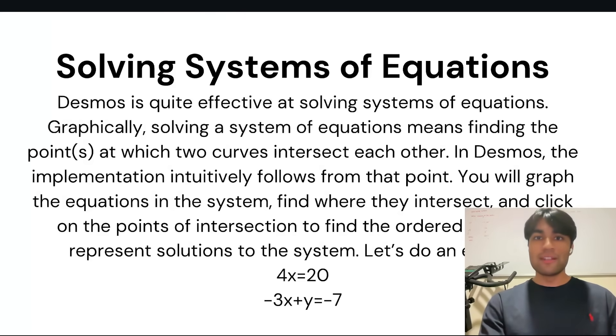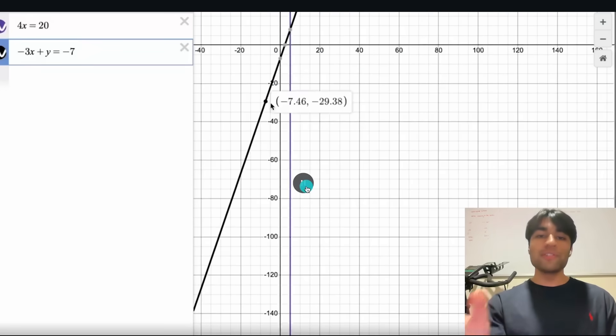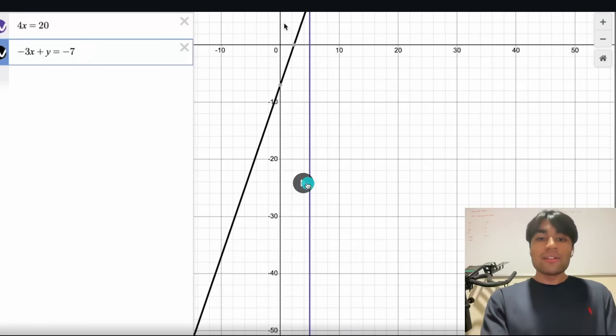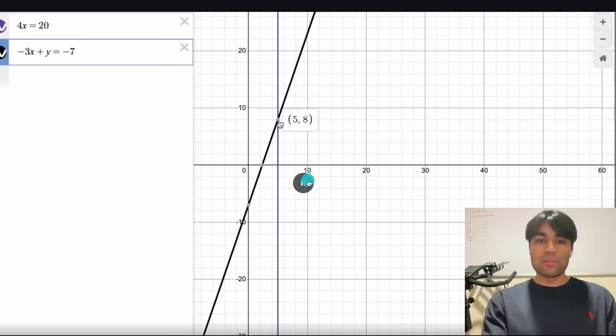Next is solving systems of equations. This is where you have two equations and normally you have to do your substitution or you have to add and subtract these equations together and try to combine them. Desmos you just type in both of them. I know this is a pretty simple one for x equals 20, but you can literally just type these in. One equation, second equation. Look at the intercept and that's your solution. Boom. x equals 5, Y equals 8.